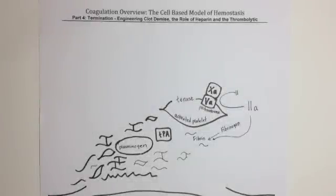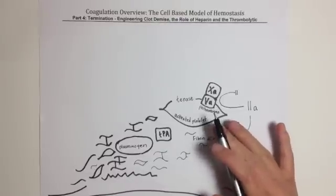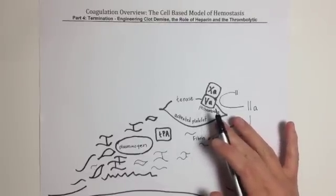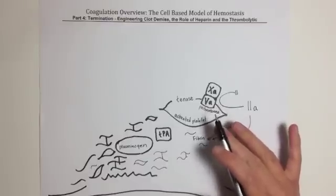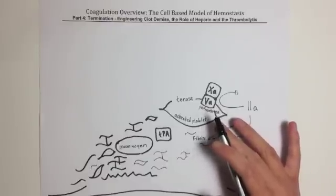Welcome back to our series on the cell-based model of hemostasis. This is the final video where we will describe termination in order to understand how this powerful cell-based thrombin generating machinery is ultimately stopped and what pharmacologic agents we can use to aid in stopping thrombus formation.